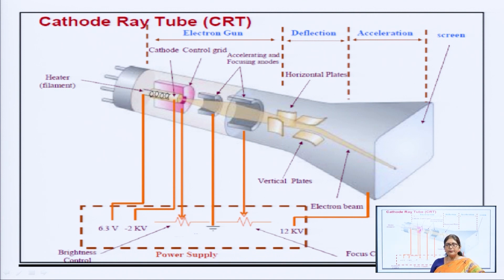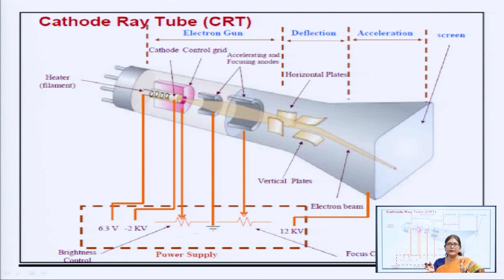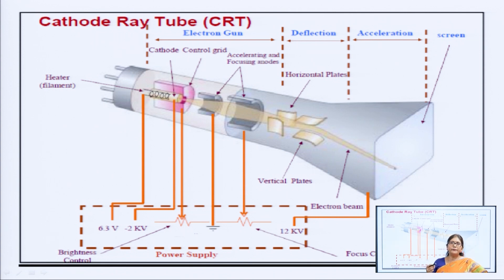There is a deflection plate assembly with a pair of horizontal deflection plates and a pair of vertical deflection plates. The horizontal deflection plates control the movement of electrons in the x direction but they are kept vertically, and the vertical deflection plates control the movement of electrons in the y direction but they are kept horizontally. The function of the screen is to convert the electrons impinging on it into light energy.